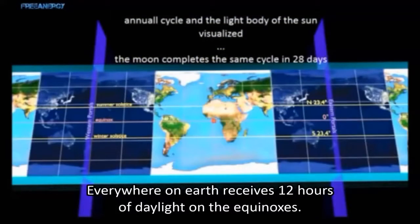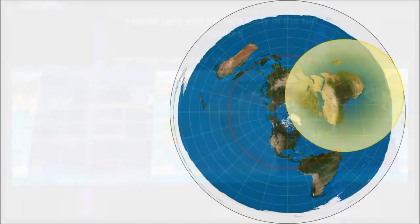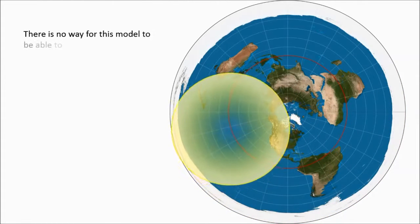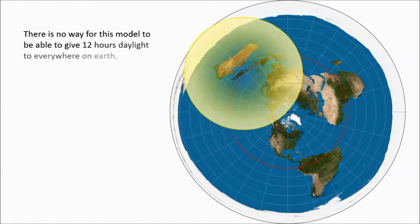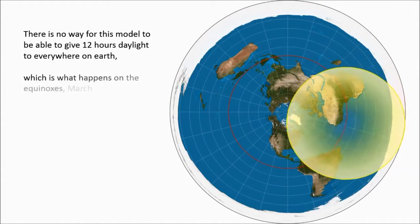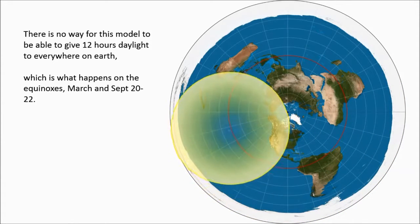Another huge point of research: everywhere on earth receives 12 hours of daylight on the equinox. Check that's correct and see if there's any way to make that happen on the circle model. Because of the way the time zones work on the circular model, they just get bigger and bigger as you go further south. There's no way for that to produce a 12-hour day everywhere on one day. It's impossible.